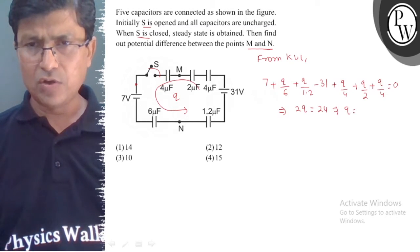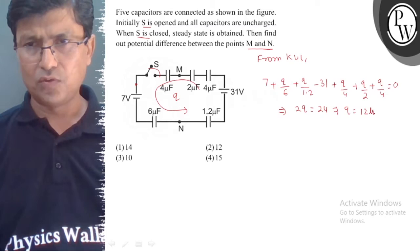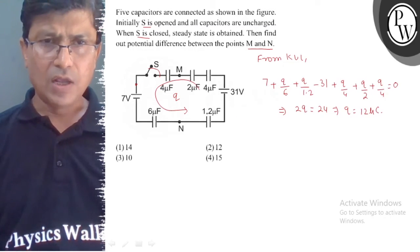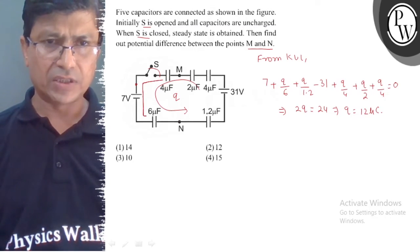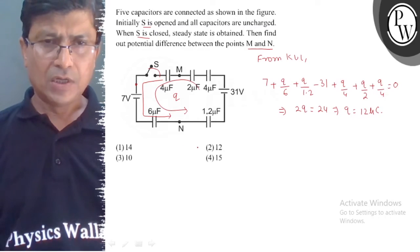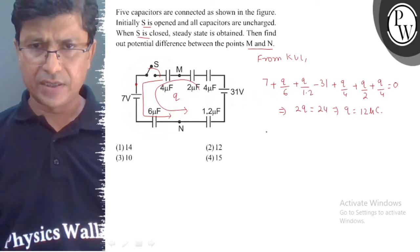Now we need to find the potential difference between M and N. We choose this path. When we go along this path...